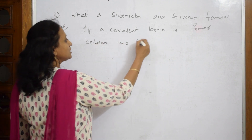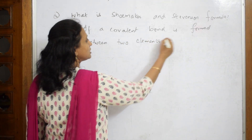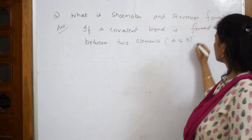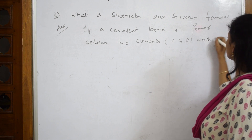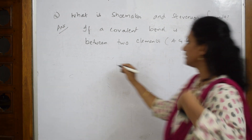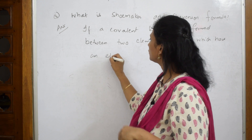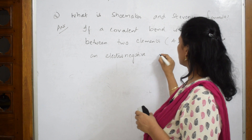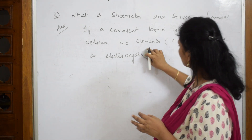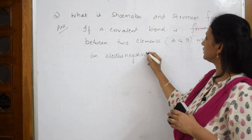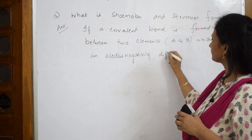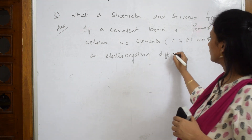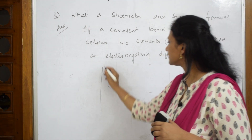Let me take those two elements as A and B. If this covalent bond is formed between two elements which have a difference in their electronegativity values, then we use the Shoemaker and Stevenson formula.